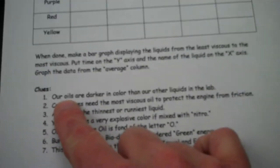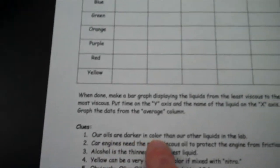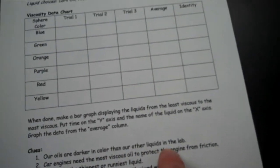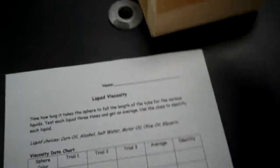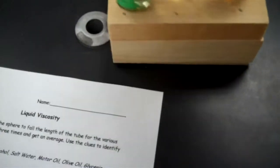Look at our clues. The first one says our oils are darker in color than our other liquids in the lab. So there's three oils: corn oil, motor oil, olive oil. So we see here that's a dark one, that one's not clear, and that one's not clear. So those three are the oils.